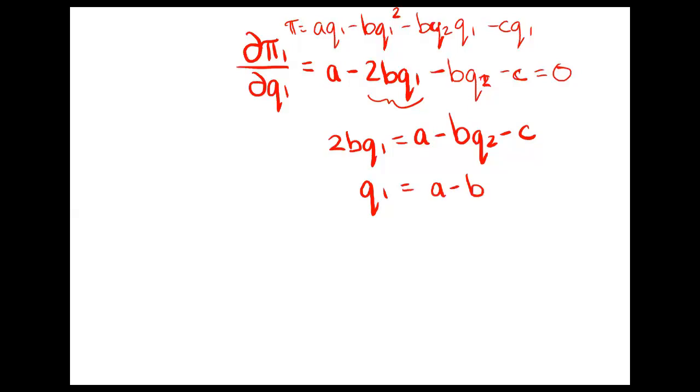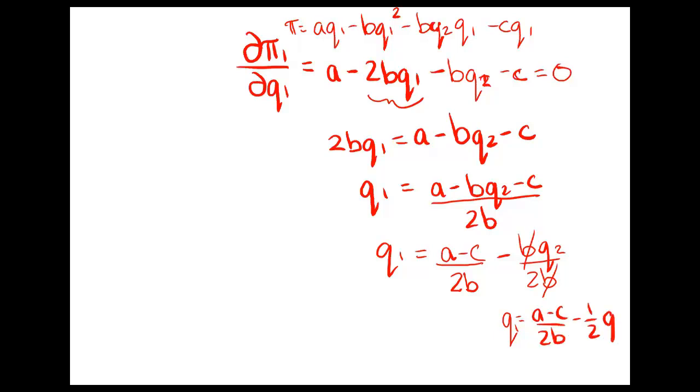So now to isolate Q1, we have to divide by 2B. And we want to just rewrite this so that Q2 is isolated on its own there. So we'll write A minus C over 2B here, and then we'll have minus BQ2 over 2B. And then we'll see that those B's cancel. So our final solution here is Q1 = (A - C)/2B - (1/2)Q2.